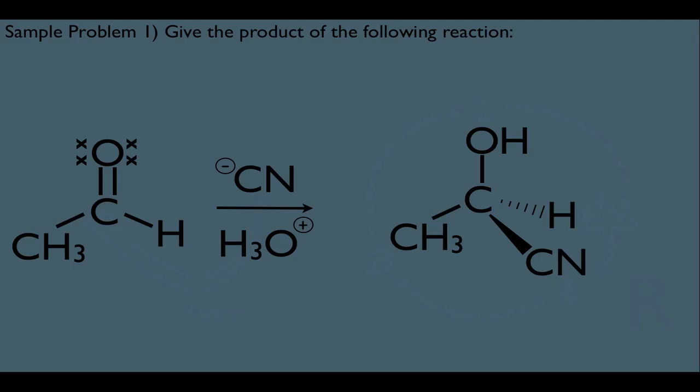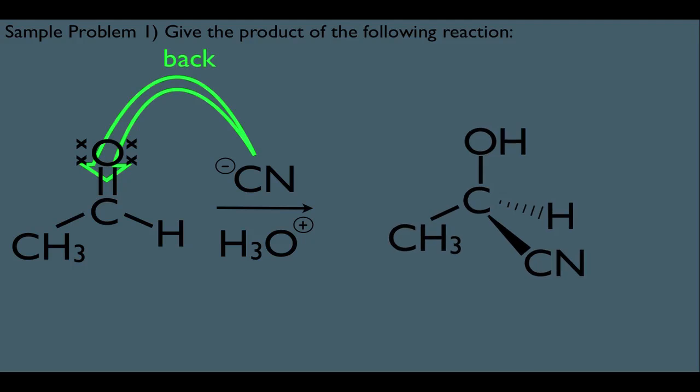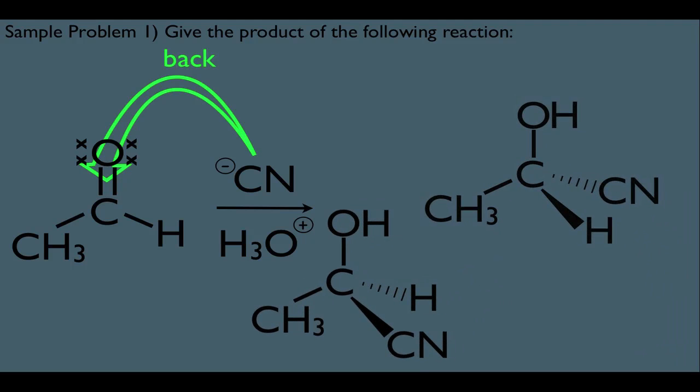But remember, that's not the only possibility. The CN can also attack from the back. If that happens, we should know that we end up getting this as a result. Our product clearly shows our CN on the back side. But let's make sure, is this product different than the one that we previously got? Well, again, setting priorities. This is priority one. The CN is still priority two. The methyl is three. And the H is still four.